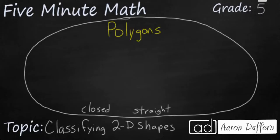Polygons are two-dimensional shapes that are closed and have straight sides. So for example if I were to draw a circle that would not be a polygon so I'm going to put it outside this shape because it is closed but it does not have straight sides.